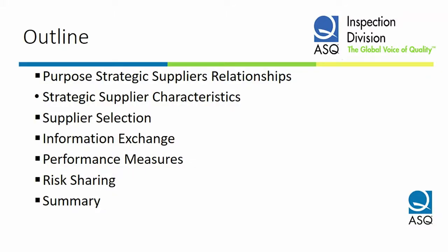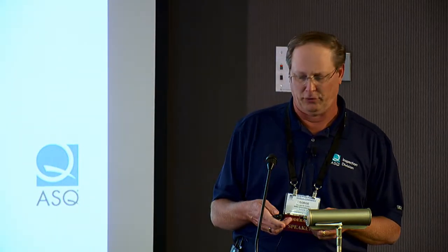I'm Director of Quality Assurance for Wireless Telecom Group, located in northern New Jersey. My background is in quality assurance and operation management. I've been lucky enough to travel all over the world developing suppliers, working with suppliers, and developing partnerships with those suppliers. I'm going to give you a short overview of the purpose of having a strategic supplier relationship, strategic supplier characteristics, what makes up a strategic supplier, and why we should be having them — the supplier selection process, information exchange, performance measurements, risk sharing, and a summary of what all that means to your organization as you move forward.